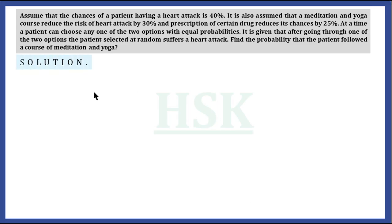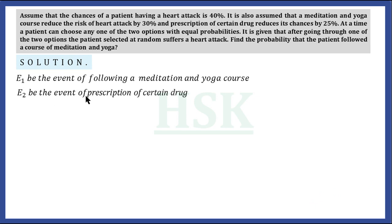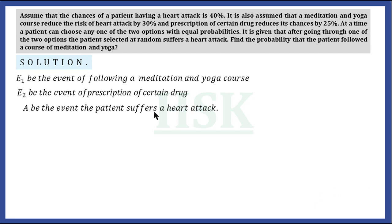We have to find the probability that the patient followed a course of meditation and yoga given that he suffered a heart attack. To solve this question, let E1 be the event of following a meditation and yoga course, E2 be the event of following the prescription of certain drugs, and A be the event that the patient suffers a heart attack.